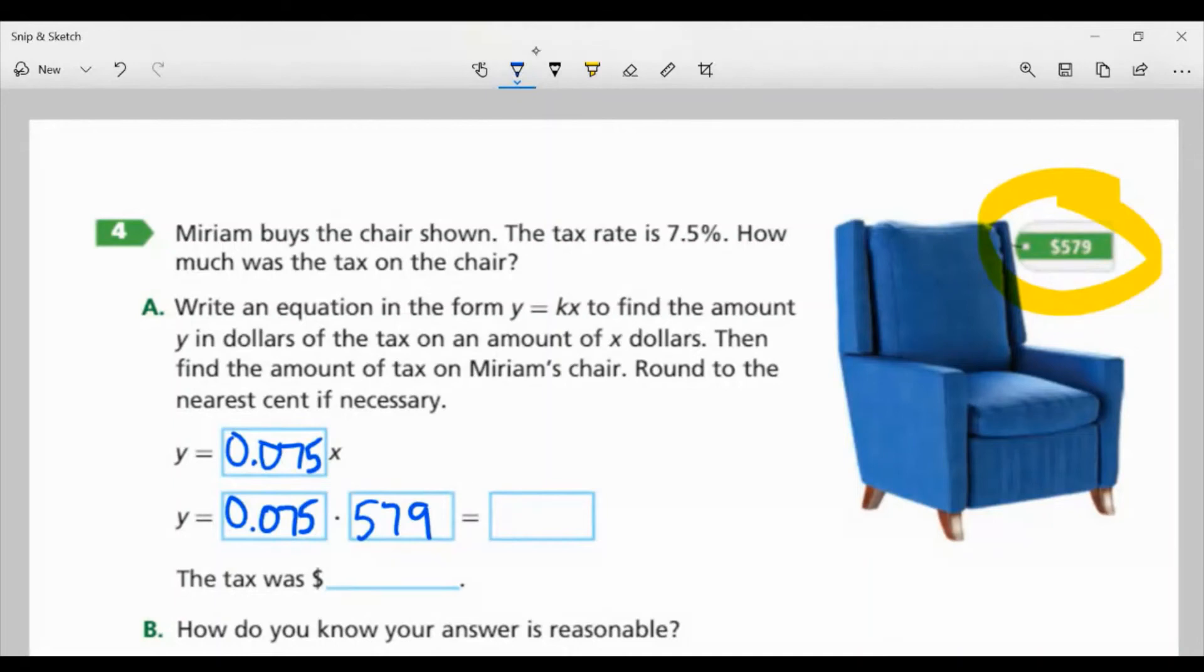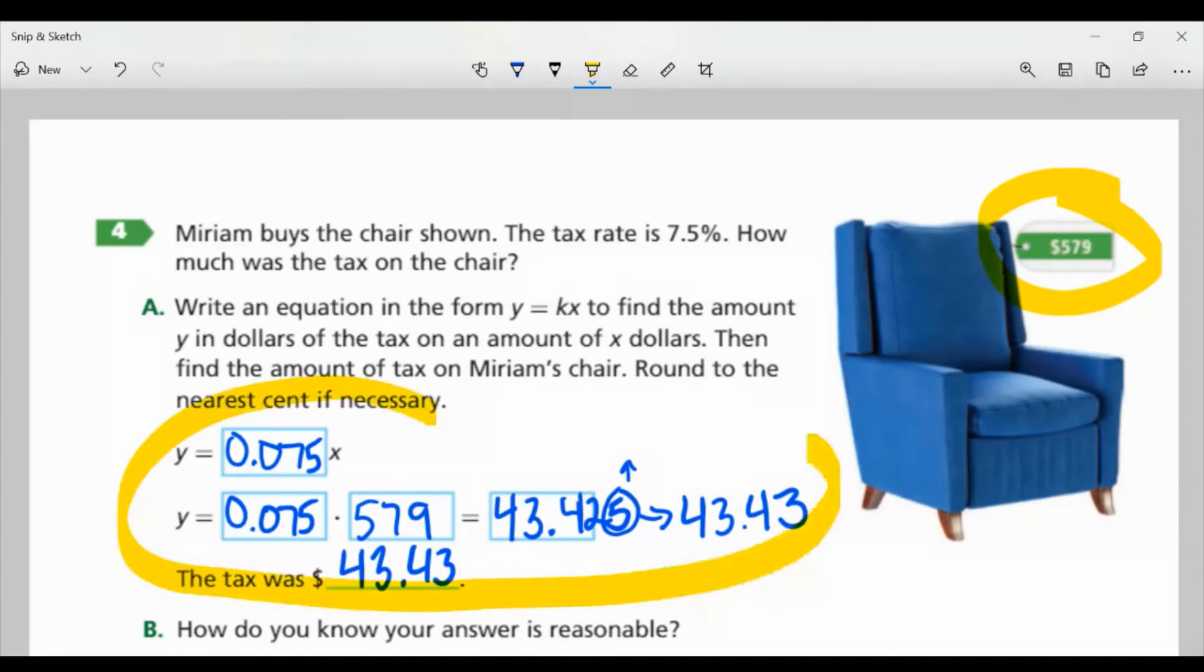Now, when I multiply this out, I will get 43.425. And remember, I needed to round this to the nearest cent, so this would actually be $43.43, because this 5 tells us to round up 1. So the tax was $43.43. Essentially, we just found 7.5% of $579. This is something we've been doing, but this time, we're just plugging it into an equation to show you how to set it up and find the percentages that way.